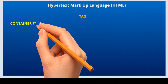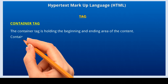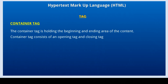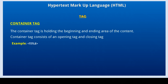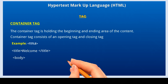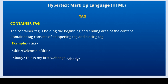Container tag: the container tag is holding the beginning and ending area of the content. Container tag consists of an opening tag and closing tag — that is, it appears in pairs. Title tag is an example of container tag. This title tag is called as the opening title tag, and this title tag is called as the closing title tag. Closing title tag has one slash line. Between these tags we are writing the content. Body tag is another example of container tag. This is the opening body tag, this is the closing body tag.